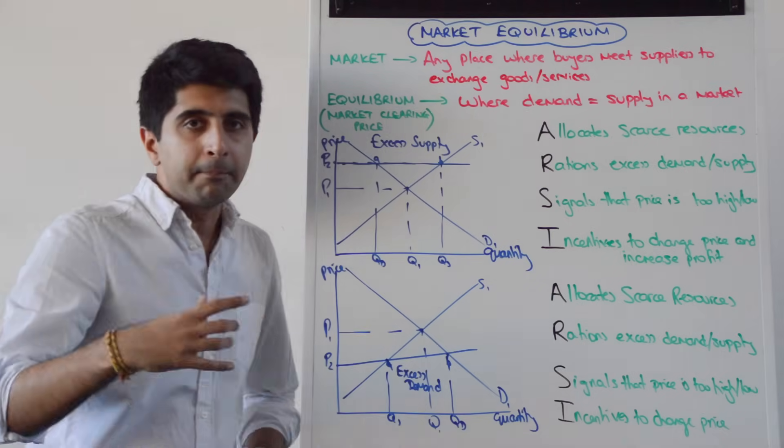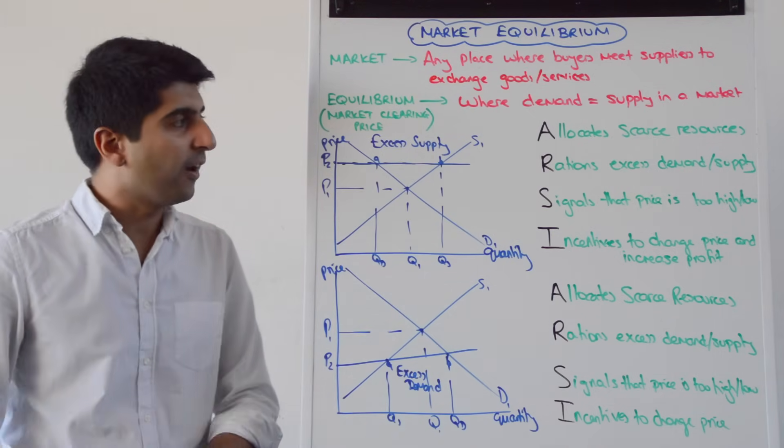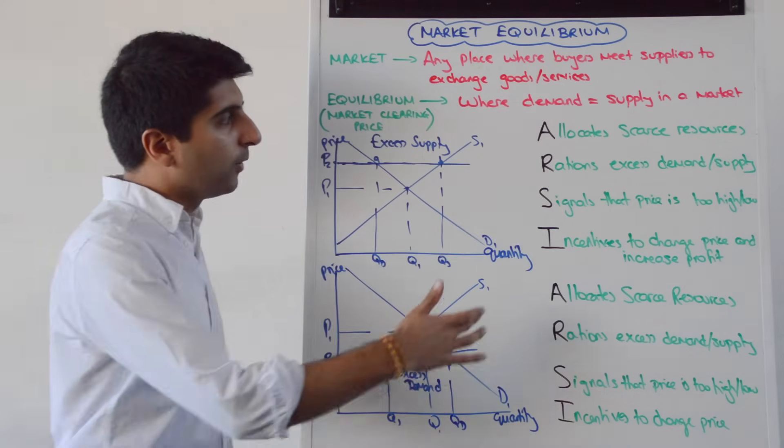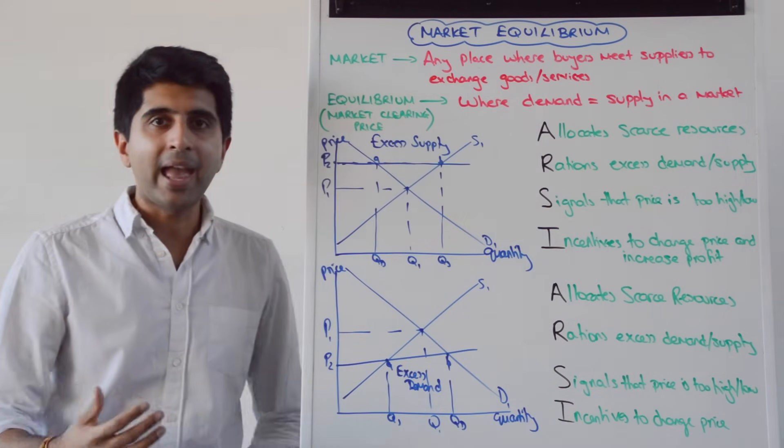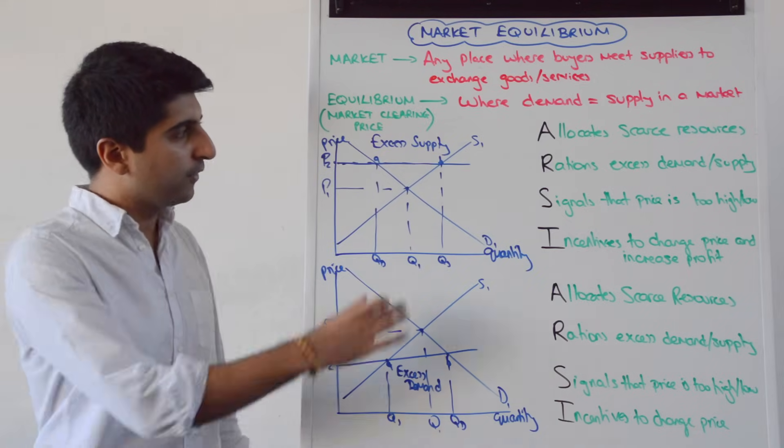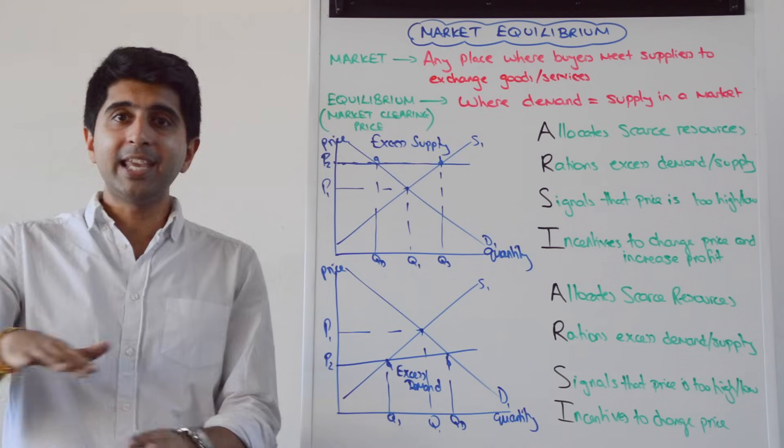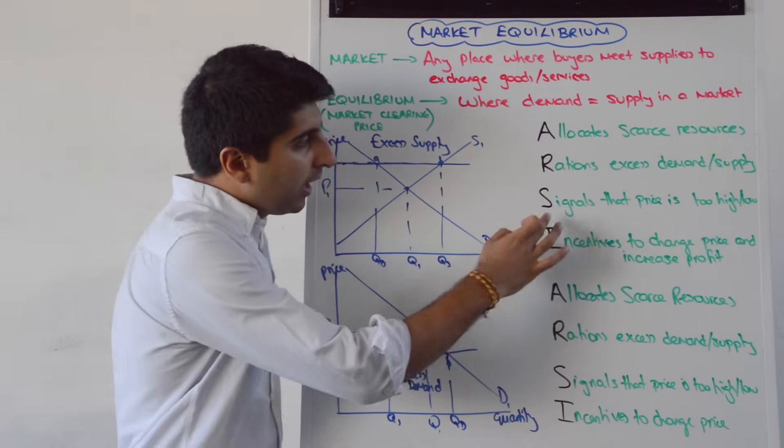And I will give you the four key functions of the price mechanism. The A, the market will allocate scarce resources efficiently, effectively, at equilibrium. So it allocates scarce resources. How? Well, it rations away any excess demands and excess supplies. So if there are any problems like this excess supply, like that excess demand, it will be taken away, rationed away.